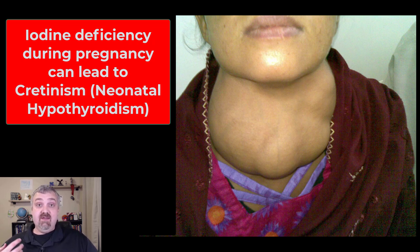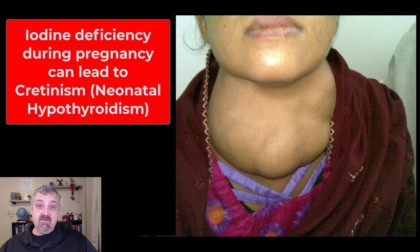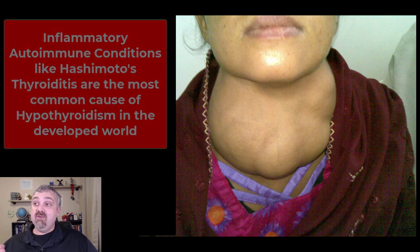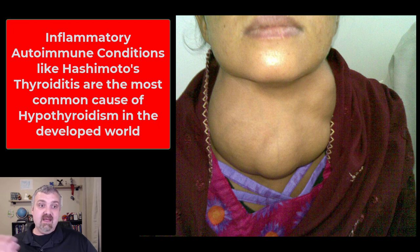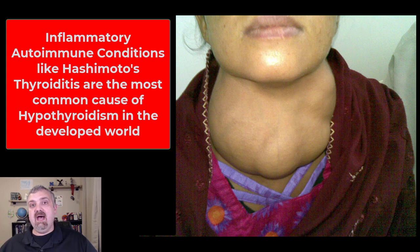Some researchers believe that if we could eliminate iodine deficiency and all pregnant women had enough iodine in their diet, the average human IQ might grow four or five points — which would be a huge deal. Worldwide, the most common cause of thyroid disorders is iodine deficiency. But in parts of the world where there's plenty of iodine, like here in the United States where we use iodized salt, the most common cause of hypothyroidism is an inflammatory autoimmune condition called Hashimoto's thyroiditis, which causes swelling of the thyroid gland.